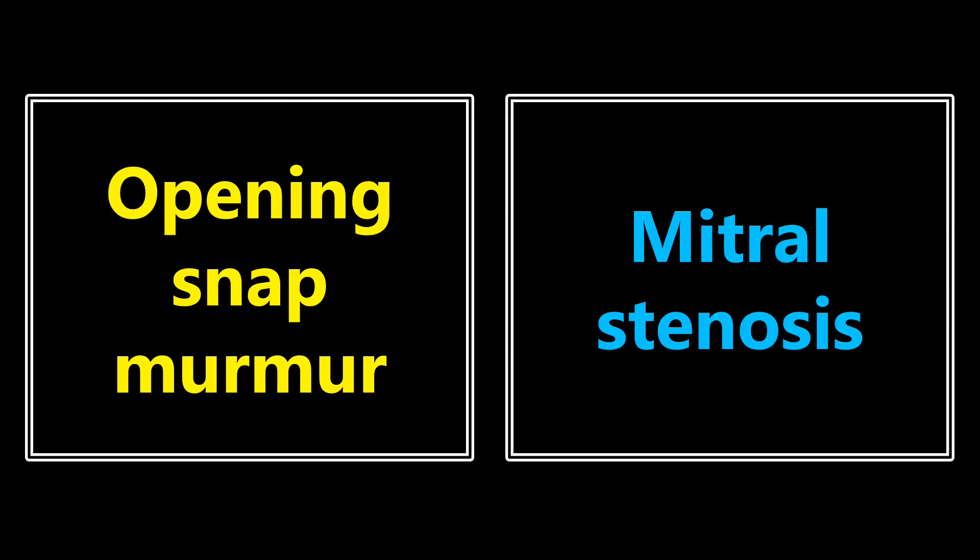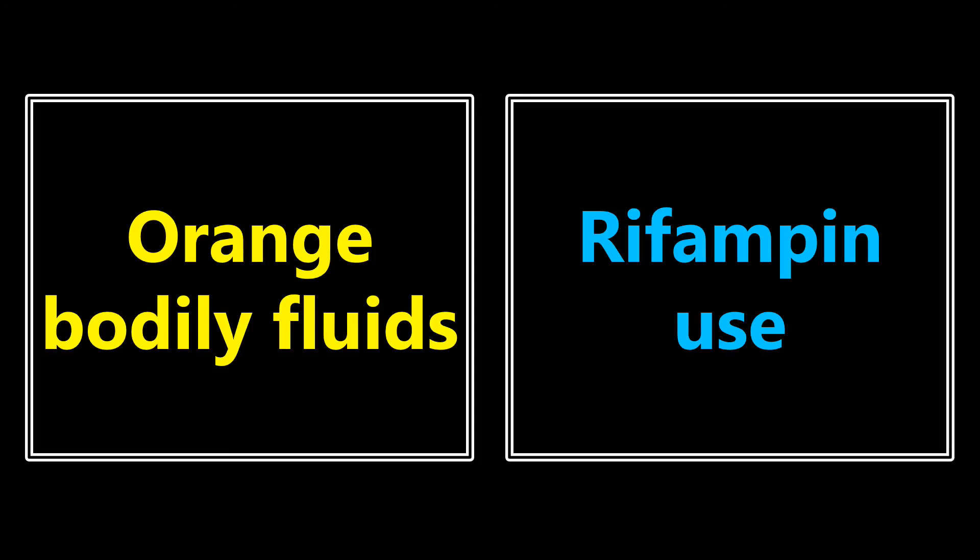An opening snap murmur — the murmurs were always a bit confusing for me, especially with the different descriptions, but when you see an opening snap murmur, you want to be thinking about mitral stenosis. Orange bodily fluids: the main scenario I've seen in questions is rifampin use, usually to treat TB.